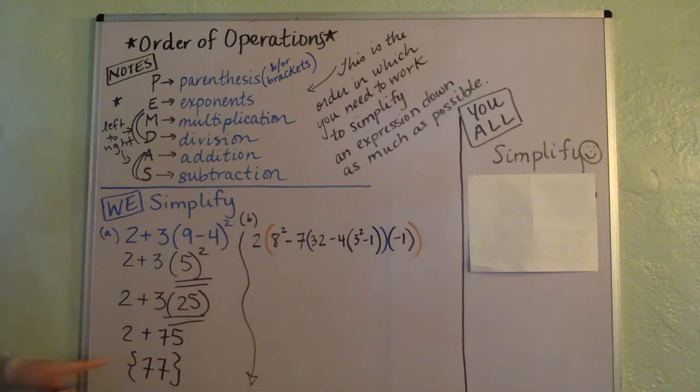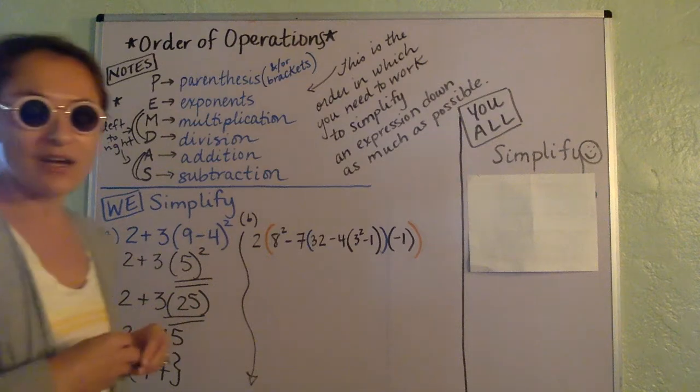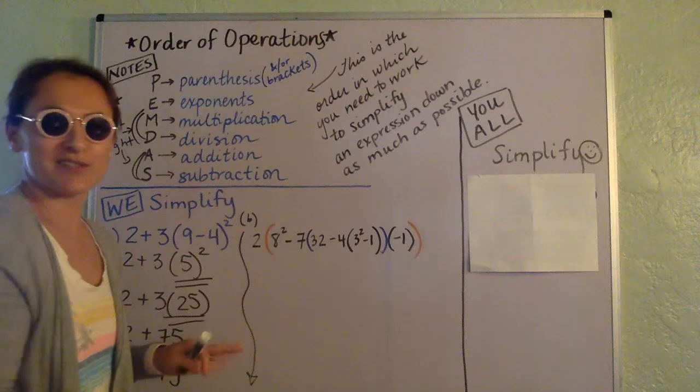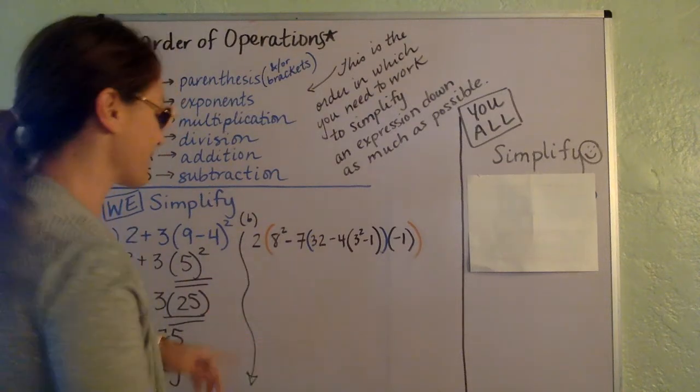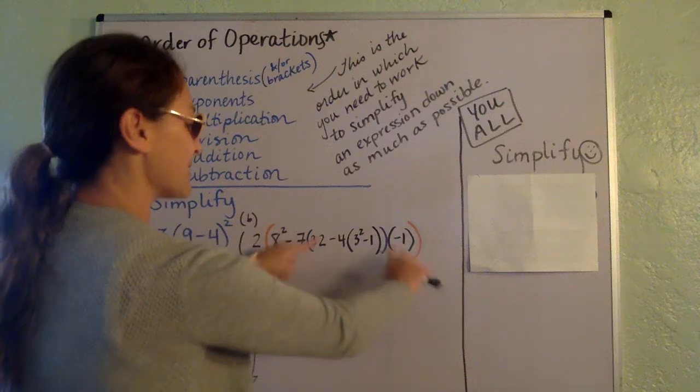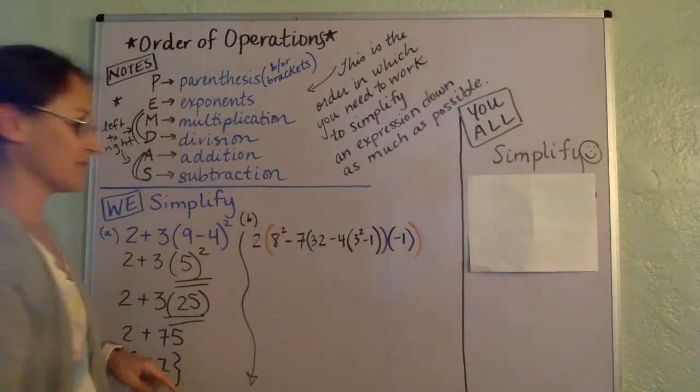And then last step, I like to use set notation. You can circle, you can box, but there it is. It's 77. Over here, I've put the parentheses in different colors just so you can see kind of the structure here. So this is big parentheses. Within that, there's this parentheses. There's this parentheses. There's that one.